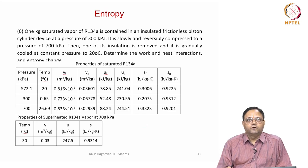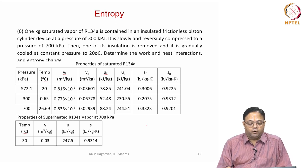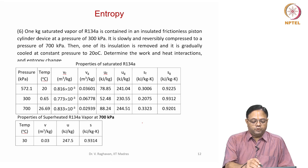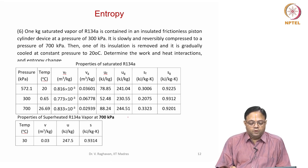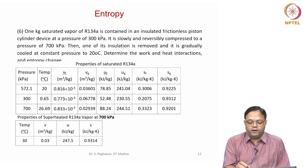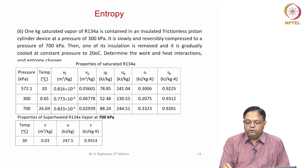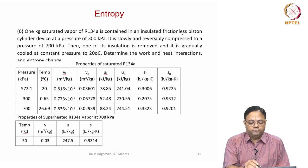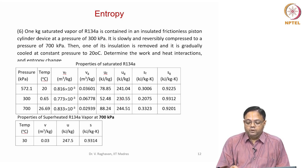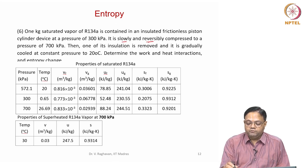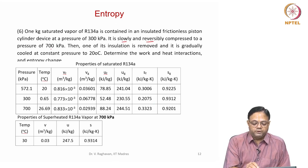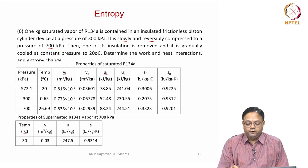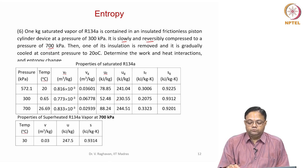Good morning. Let us continue with tutorial number 8 on entropy, the sixth problem. Here, 1 kg of saturated vapour of R134A is contained in an insulated frictionless piston-cylinder device at a pressure of 300 kilo Pascals. It is slowly and reversibly compressed to a pressure of 700 kilo Pascals.